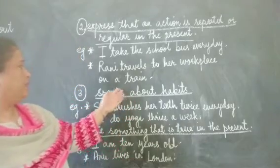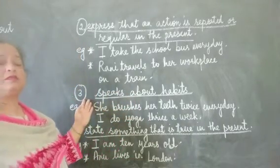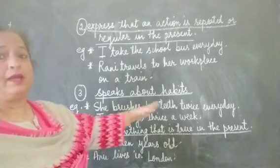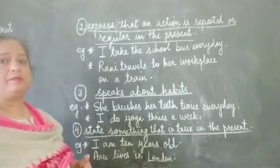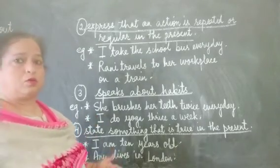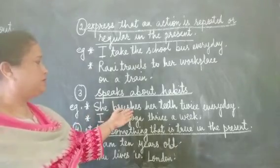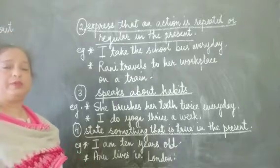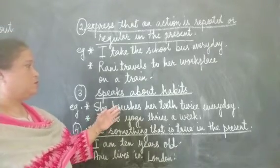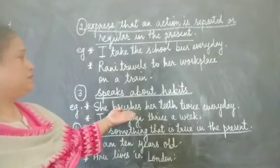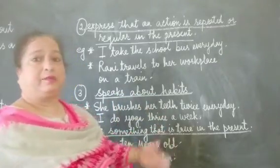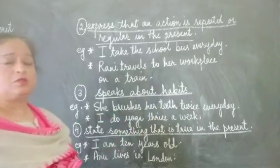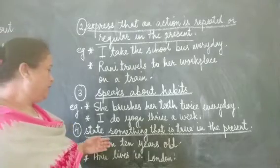The third use of simple present tense is that it speaks about habits — habits that we are taught. For example, 'She brushes her teeth twice every day.' This is a habit we are taught when we are children, and the verb tells us about an action that is a habit. Another example: 'I do yoga twice a day' — this is also a habit which is being built in us.